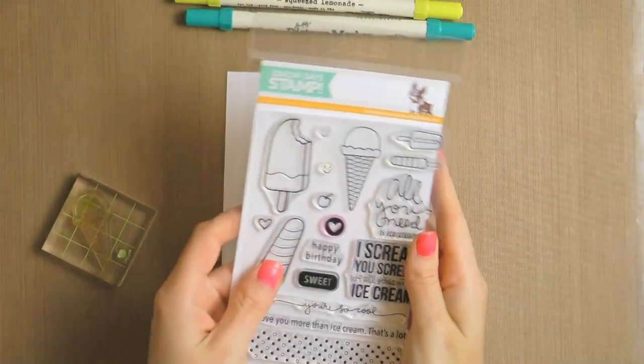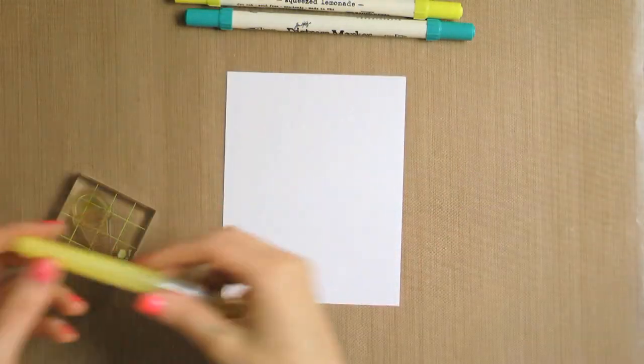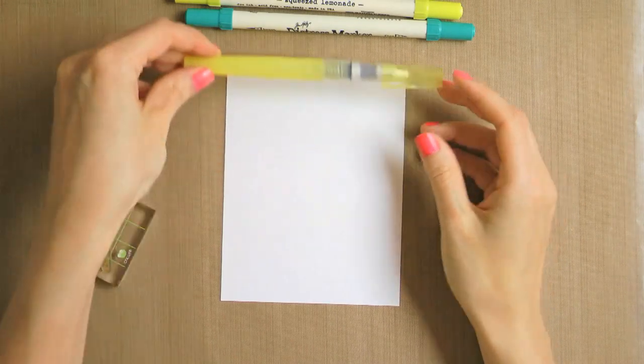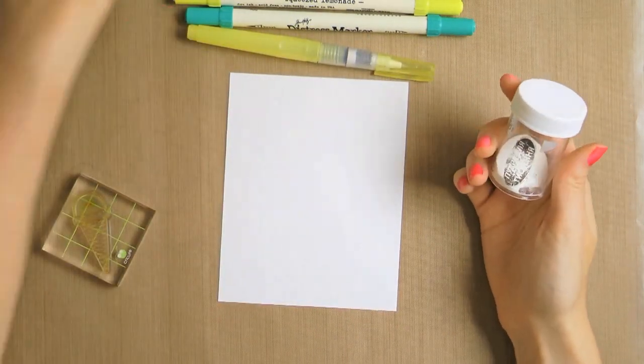This card, however, started as something completely different. I wanted to use this ice cream cone stamp from the Ice Dream set from the kit to create a fun ferris wheel type background.